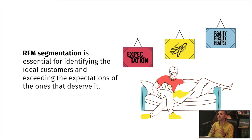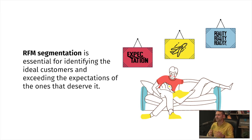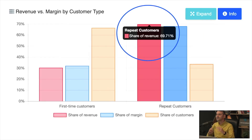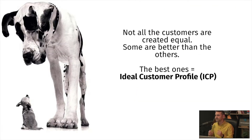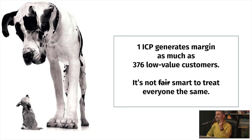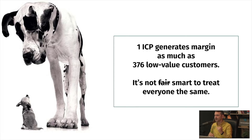RFM is essential to separate the ideal customers and exceeding their expectations from the toxic customers — the ones that don't deserve your attention as much. Repeat customers matter after a point, but the most important are the ideal customers, the ICPs. One single ICP generates as much margin as 376 low-value customers, so it's not fair or smart to treat everyone the same.